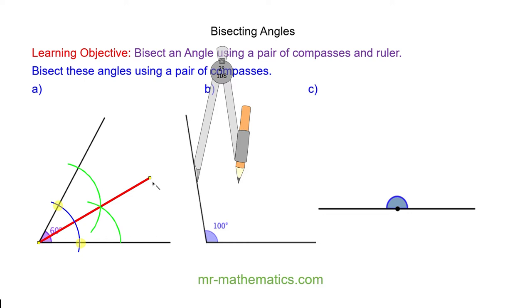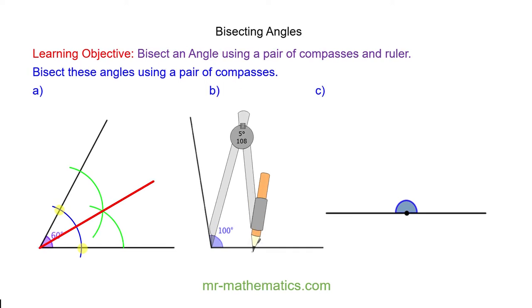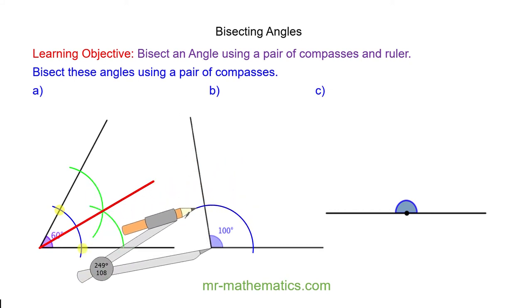Okay let's try question B. Again I'm going to draw a blue arc through the two lines. Now I draw two green arcs putting my pin on each of these two points.